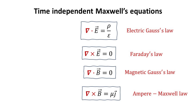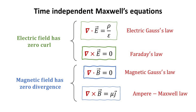We can obtain the time-independent Maxwell equations by simply setting the time derivatives to zero. Now we can clearly see that the electric field has zero curl, while the magnetic field has zero divergence in the static limit. The source of the electric field divergence is due to the charge density, while the source of the magnetic field curl is due to the current density. Thus, we call the charge and current densities the source terms.